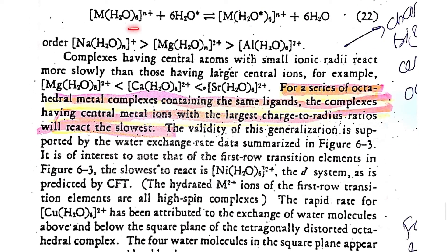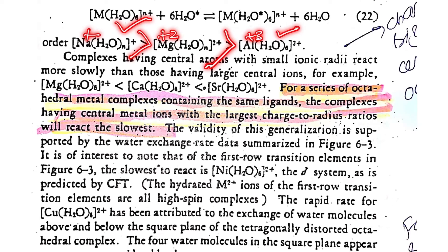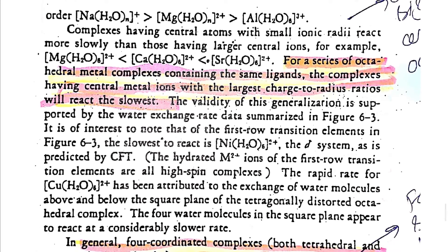Similarly, in water exchange reactions, the lability order is Na⁺ > Mg²⁺ > Al³⁺. Sodium has +1 charge, magnesium has +2, and aluminum has +3. It is easier to break the metal-ligand bond in the lower-charged sodium complex, so sodium shows the greatest lability, followed by magnesium, then aluminum.